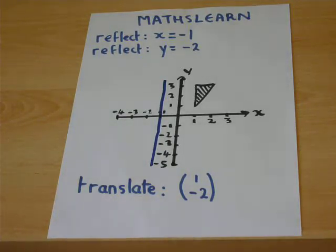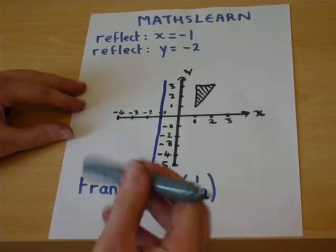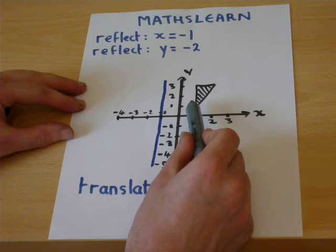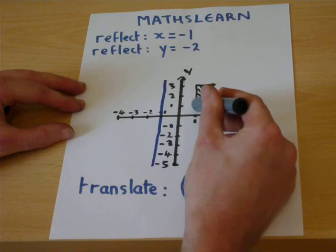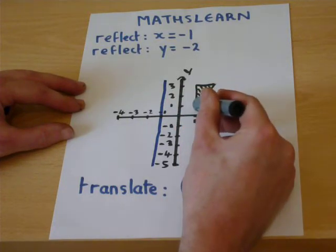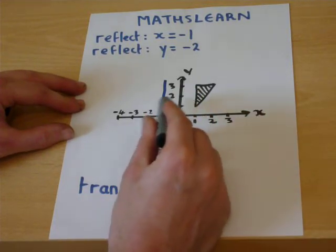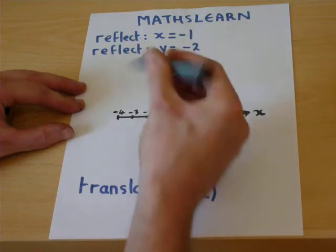And then what one does is, you look at the given shape and reflect it across the line. So going through each coordinate in turn, this bottom coordinate is 2 away from the line. So when it's reflected it goes 2 to the other side.